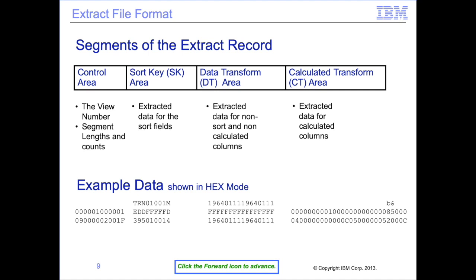The sort key, or SK area, contains the value the user has specified the output file should be sorted and/or grouped by. The data transform, or DT area, contains alpha, alphanumeric, and numeric column data that is not used in a format time calculation, including subtotaling or format time selection logic. The calculated transform, or CT area, contains column data that is either used in format time calculations, including subtotaling or format time selection logic. The sample data is shown in hex mode, where the display shows packed and non-printable characters.